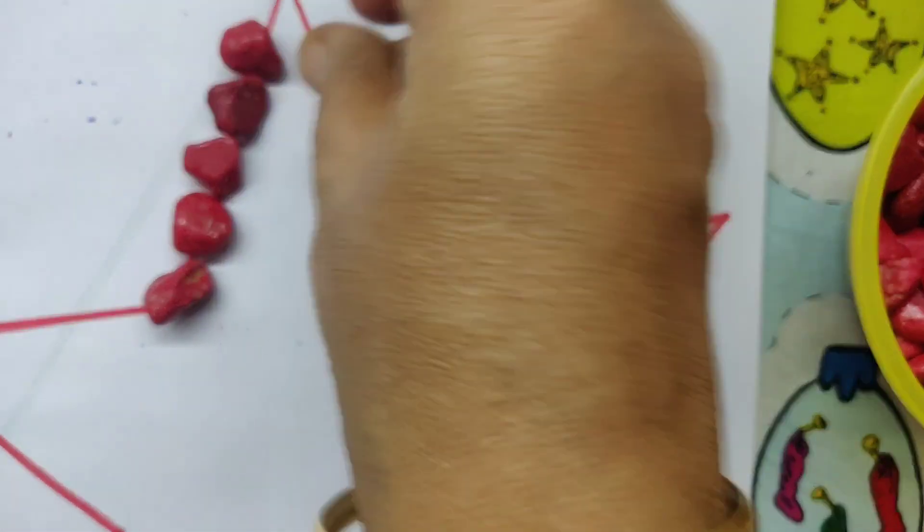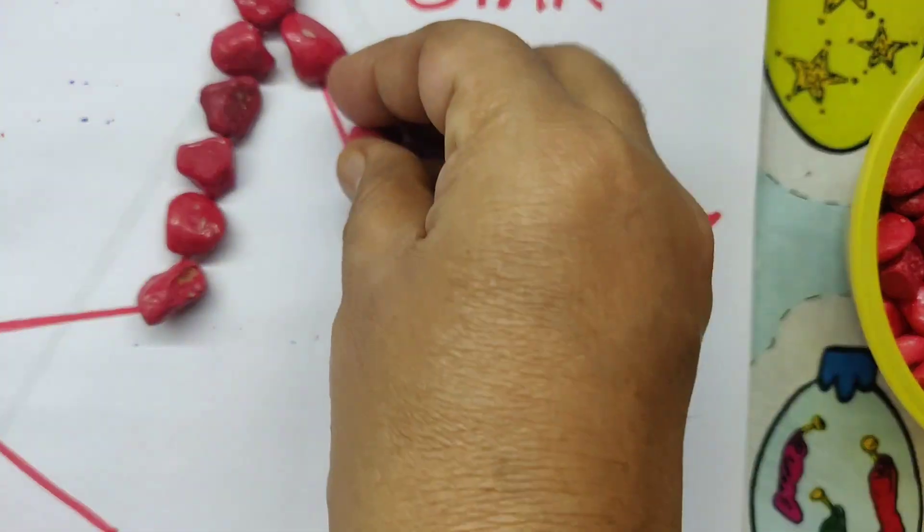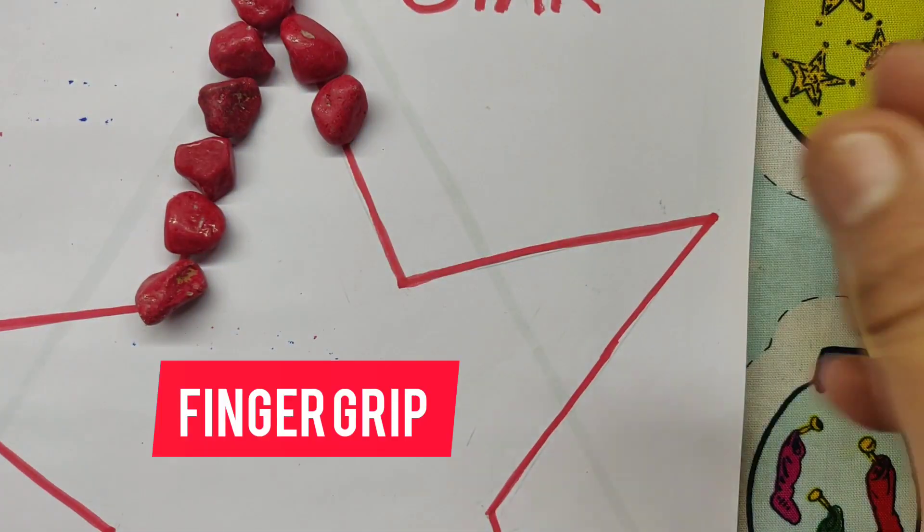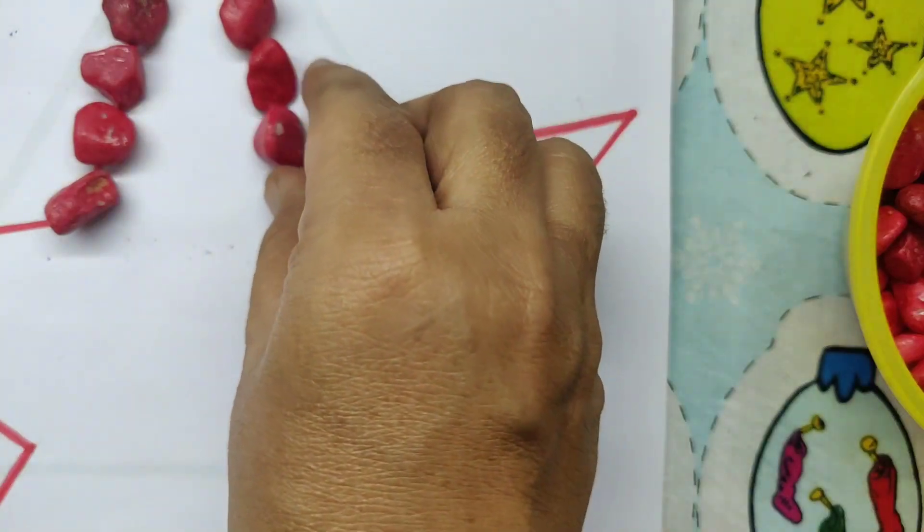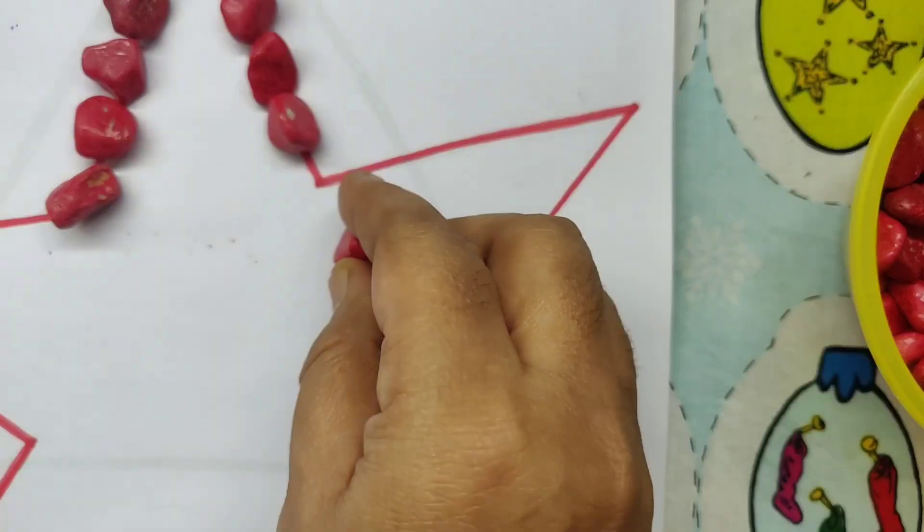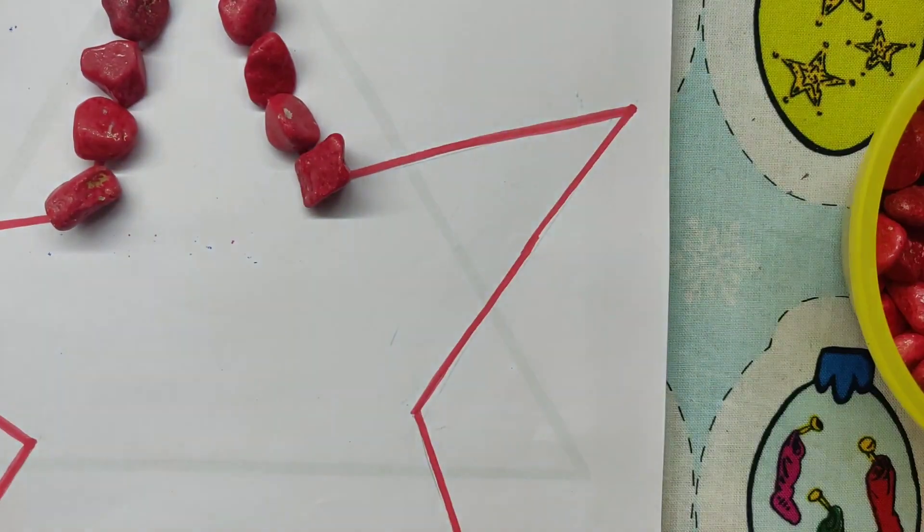You can use fingers or pluckers to arrange the pebbles. In the star we will arrange them along the line.